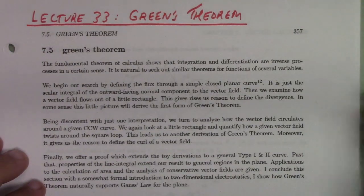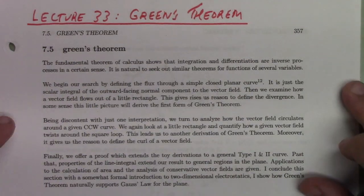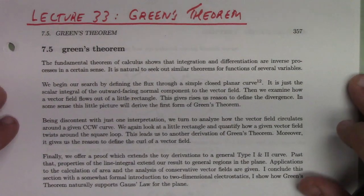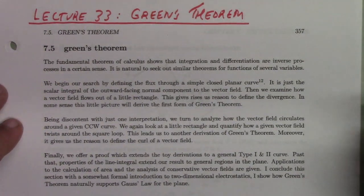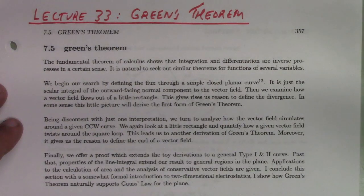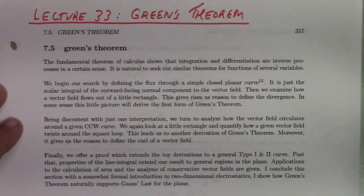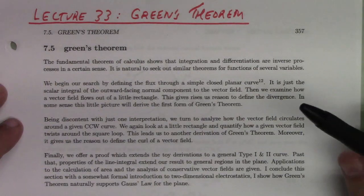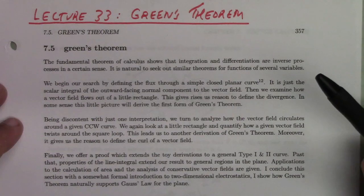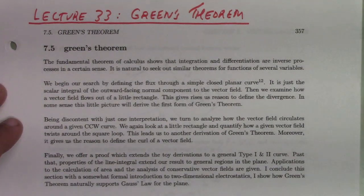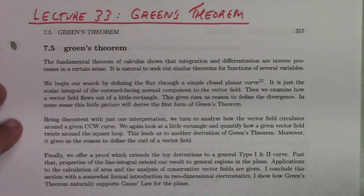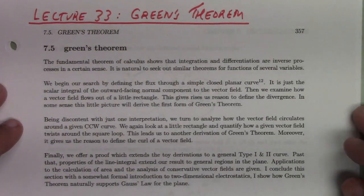This is lecture 33 on Green's Theorem. Green's Theorem concerns a connection between double integrals and the line integral of a vector field in the plane. It's a very interesting theorem — in some sense, yet another version of the fundamental theorem of calculus. The proof of Green's Theorem, or really understanding where it comes from, is perhaps a little bit surprising.